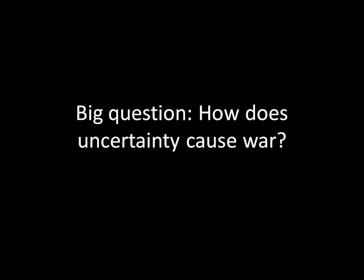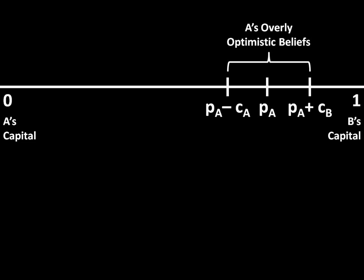So to address this issue, let's suppose A is very optimistic about its chances of victory in a war. Here we have labeled the probability of victory PA as being way down here on the line, so A is very likely to win. And of course if they were to fight wars, they'd have to pay costs, so we have CA and CB — A's cost of war and B's cost of war. This creates the bargaining range right here, and A believes that any settlement between here and here is mutually preferable to war. So they should be able to come to an agreement and avoid the costs of conflict by agreeing to a peaceful settlement within that bargaining range.